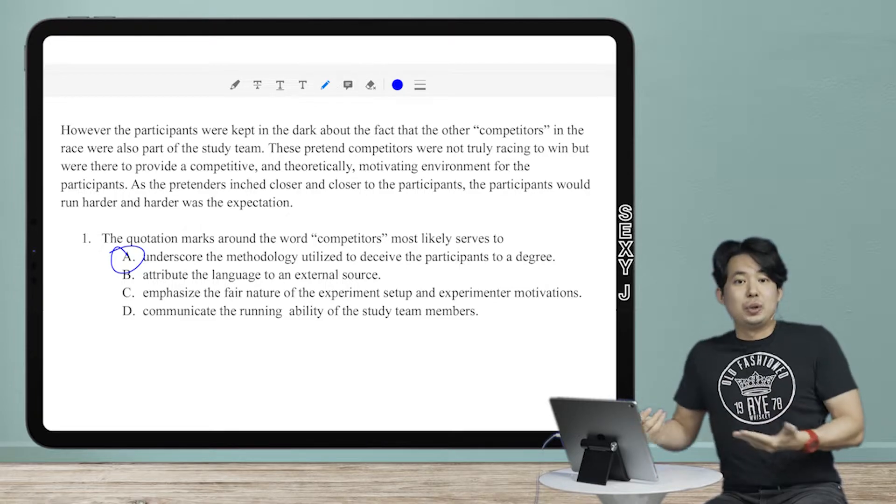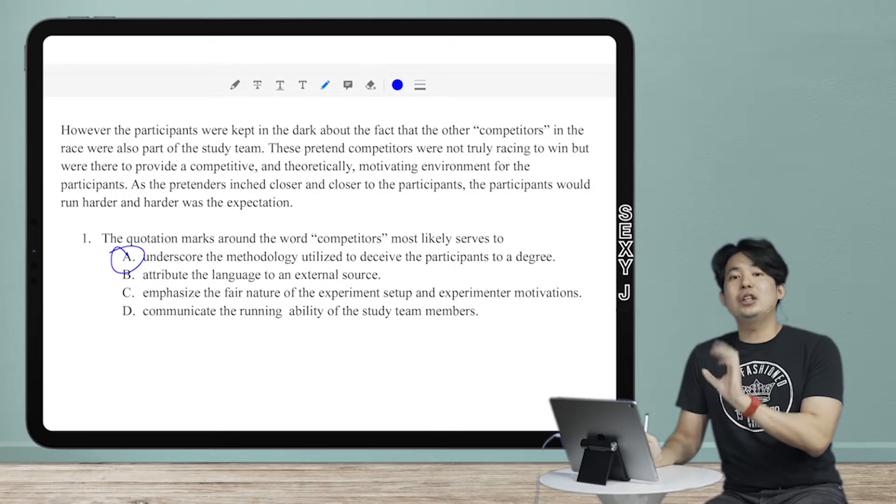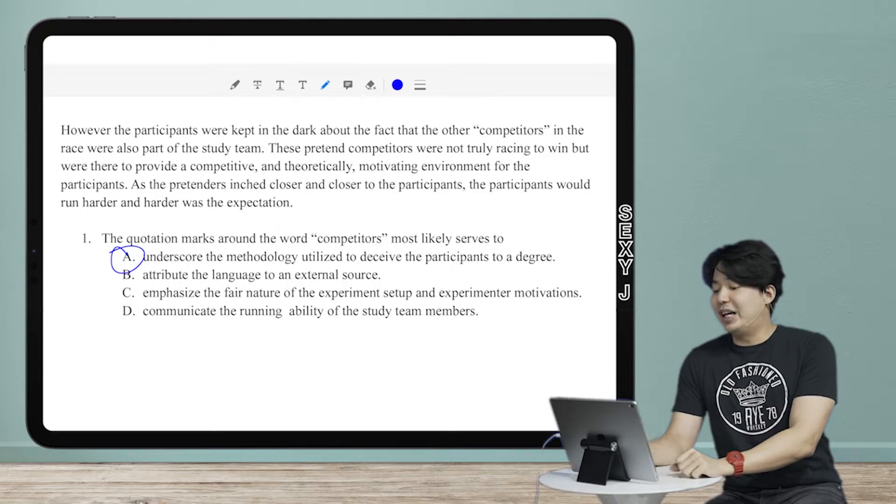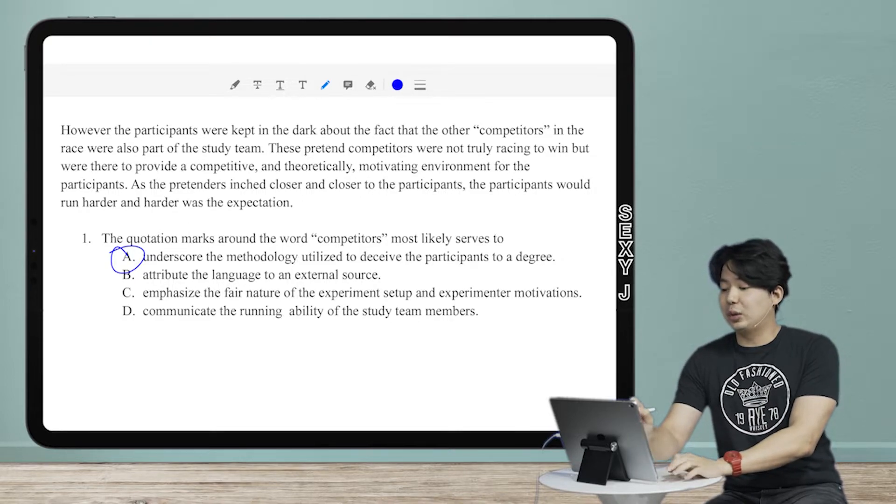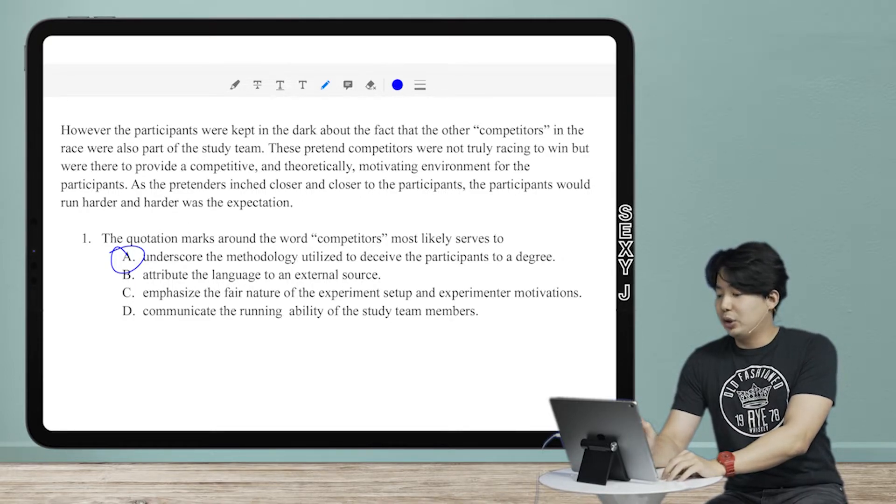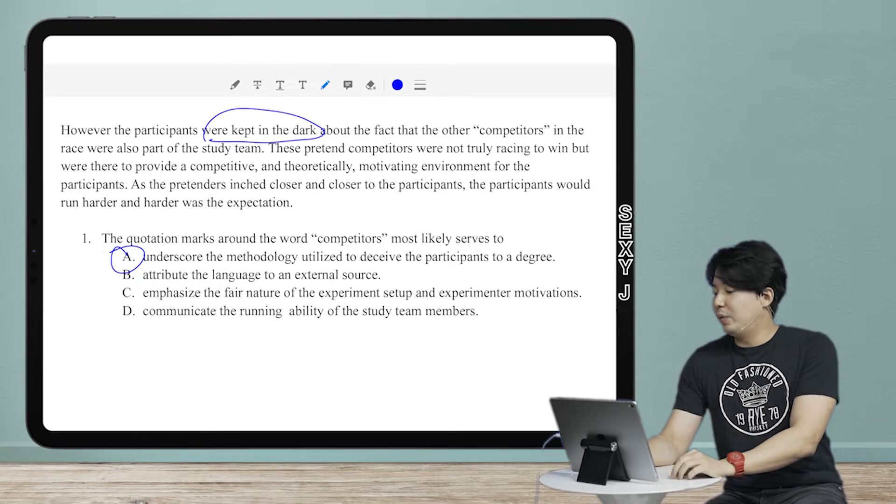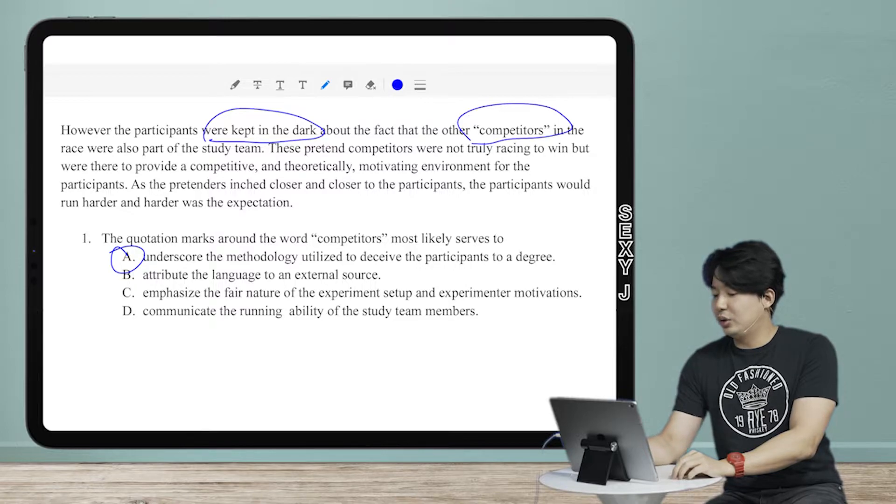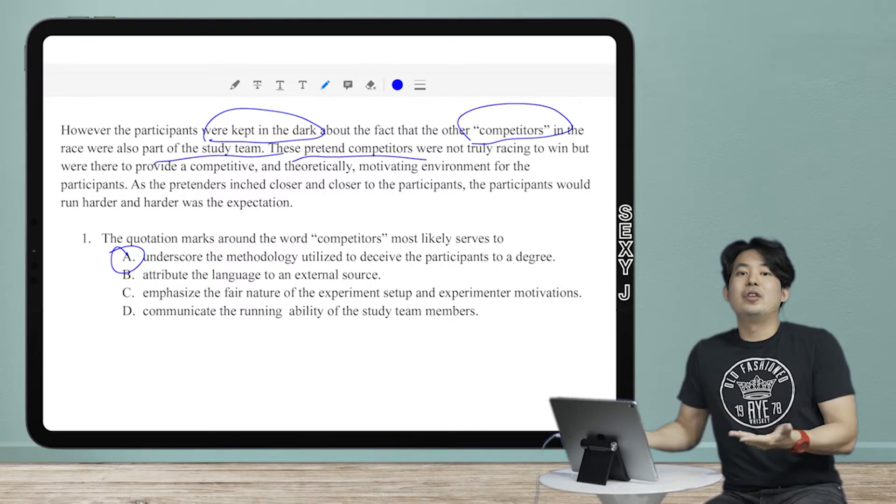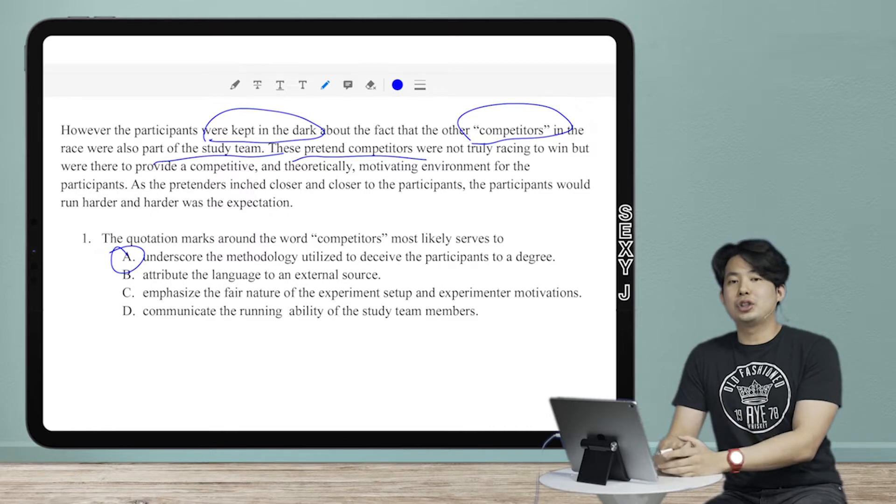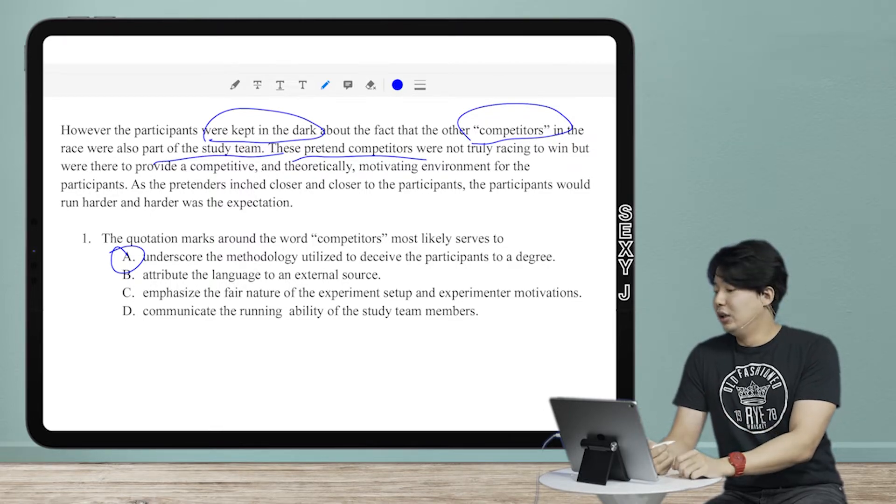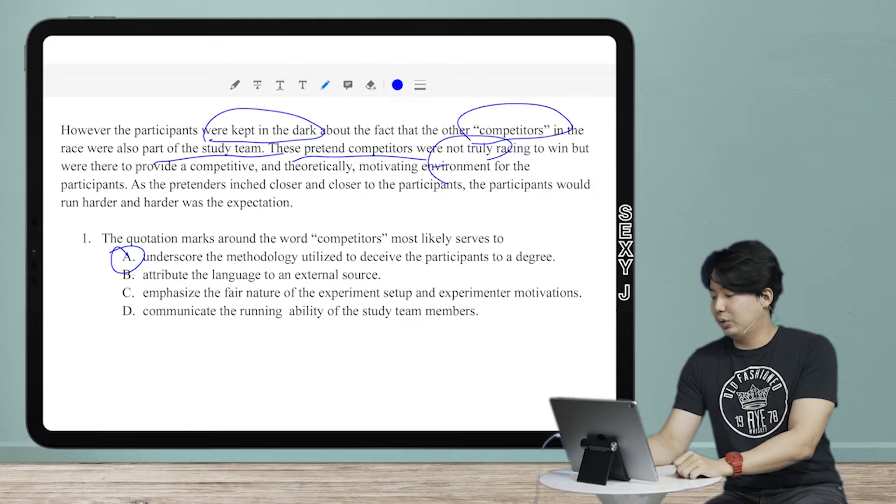So that's probably going to be the answer when I use a quotation. They are not actually participants. Oh my bad, they're not actually competitors. I forgot my word there. So that's my answer. So let's actually look at the passage. However, the participants were kept in the dark. What does that mean? They didn't know about the fact that the other competitors in the race were also part of the study team. These pretend competitors, they are not actually competitors. Other words I could use are actors. So these pretend competitors were not truly racing. Not truly. So that's really enough information, right?